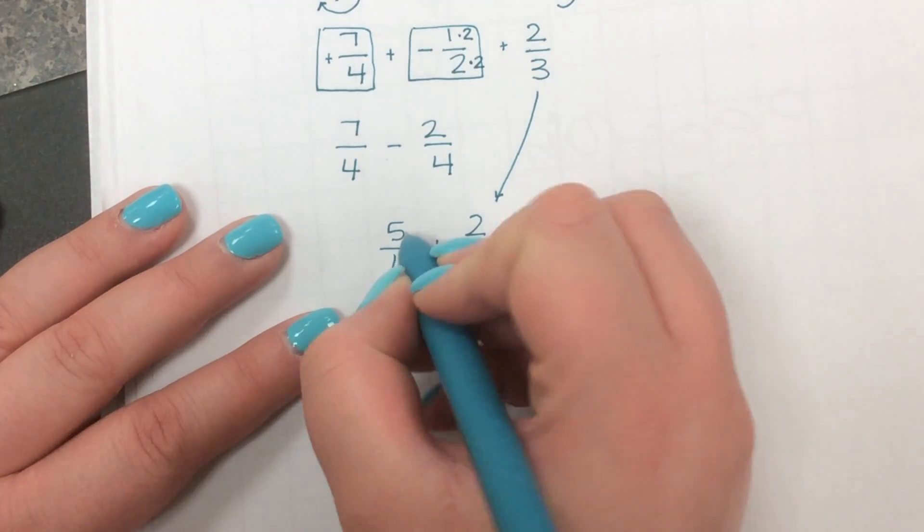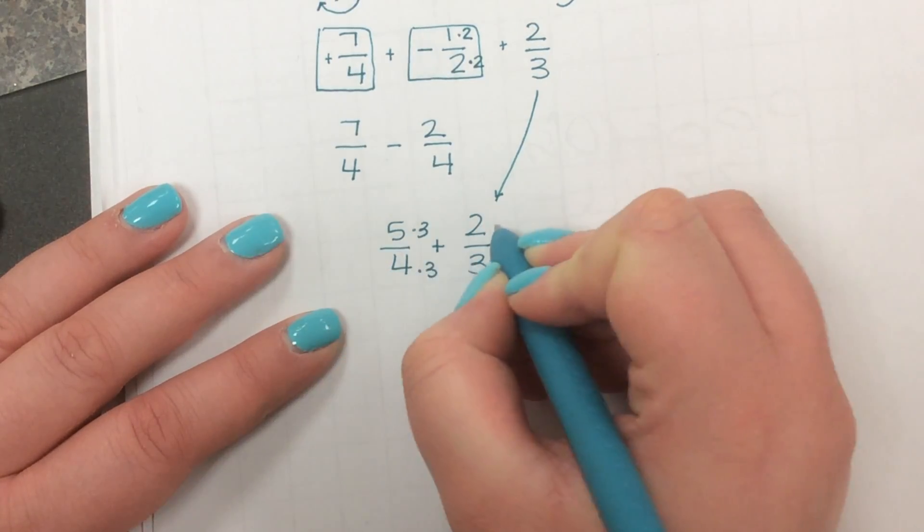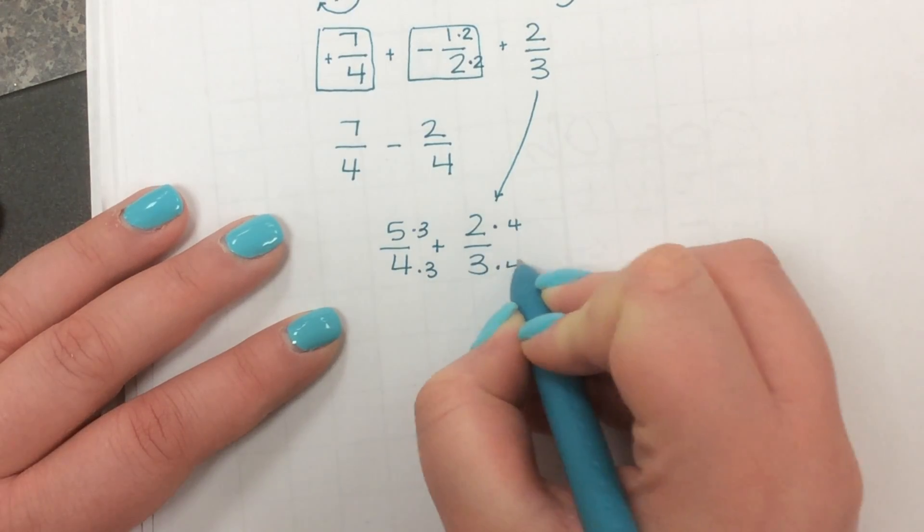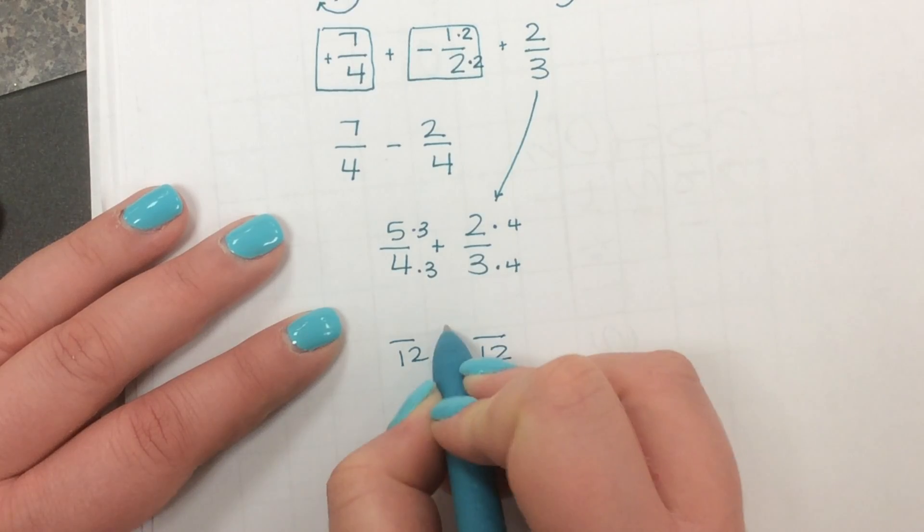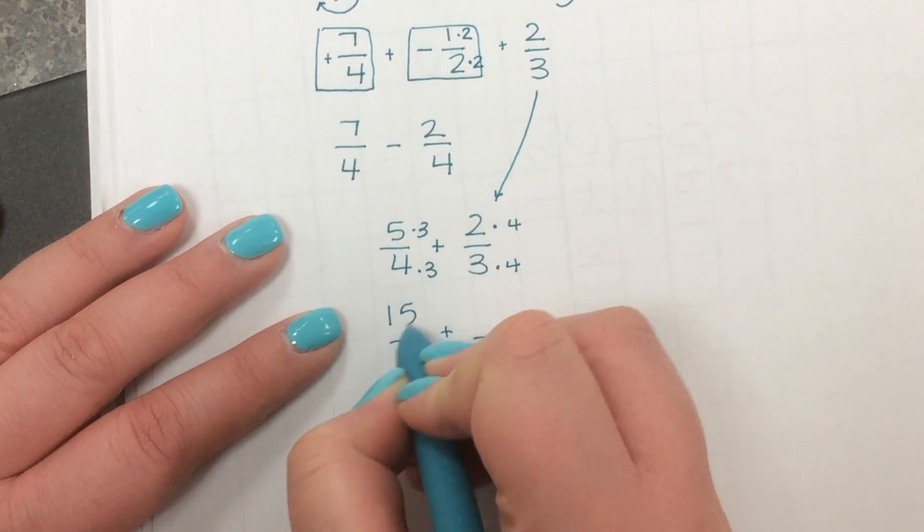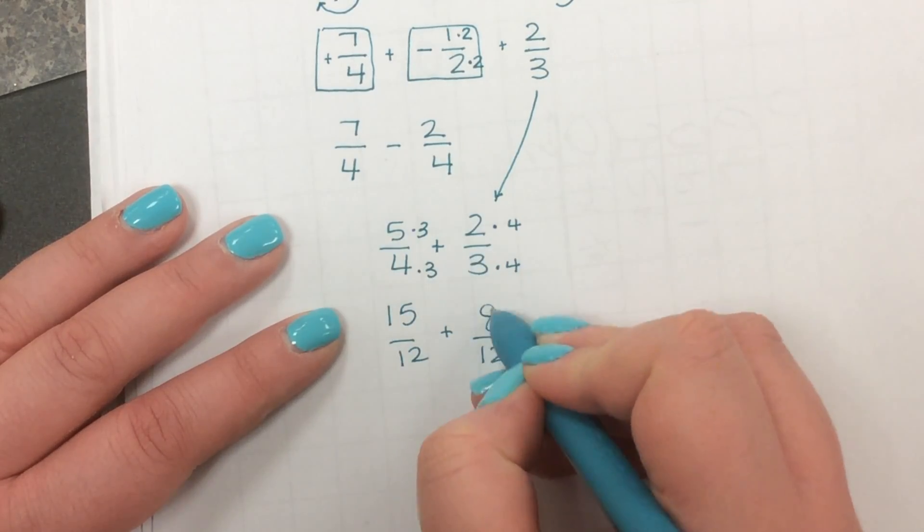Well, it is 12. So I'm going to multiply both of those by three and both of these by four to get my denominators to be 12. And then five times three will give me 15 twelfths. Two times four will give me eight twelfths.